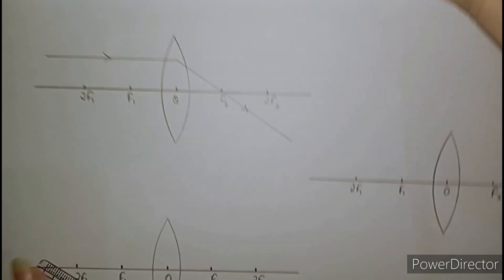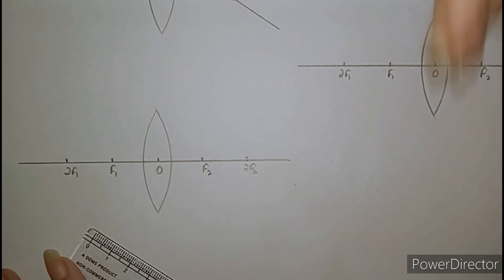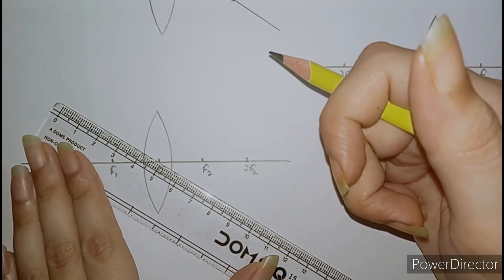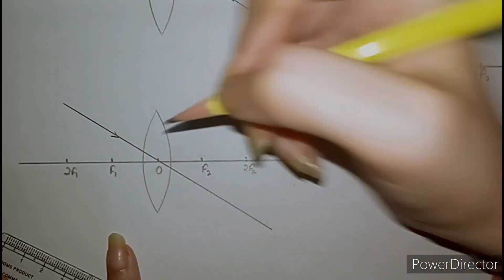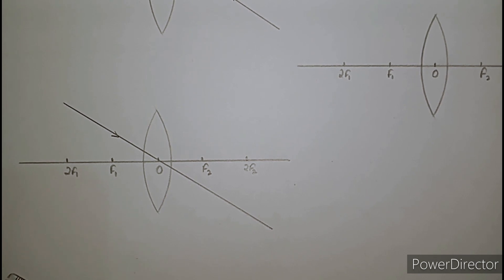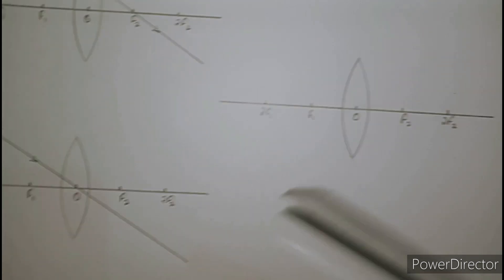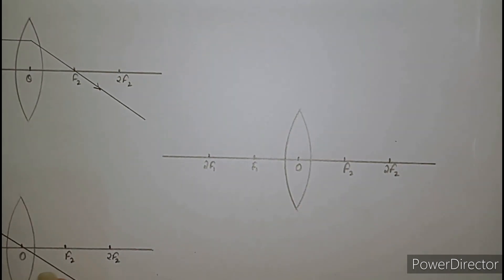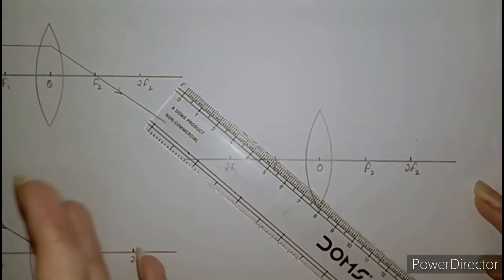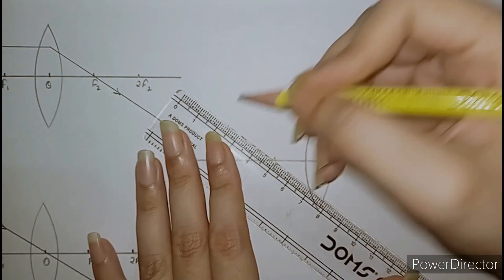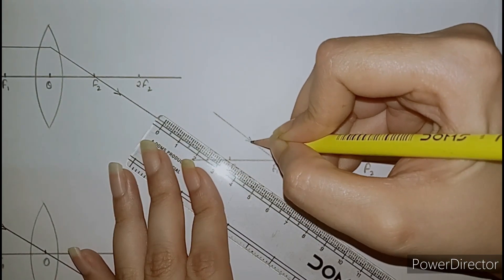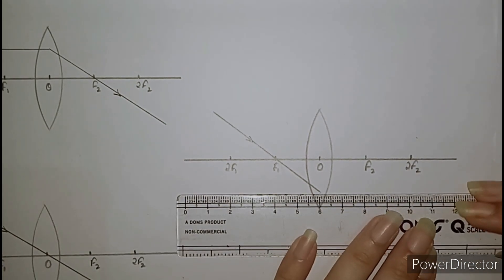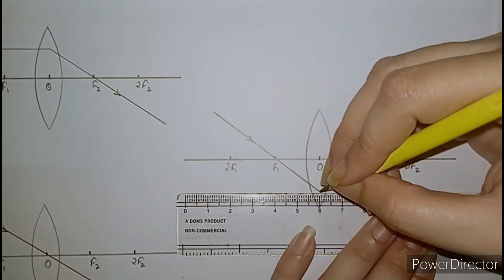The second rule states that if a ray of light is passing through the optical center, it goes straight, undeviated — meaning without bending and without showing any refraction, because lenses follow the phenomenon of refraction. The third rule says that if a ray of light is coming and passing from the focus, after refraction it will become parallel to the principal axis.